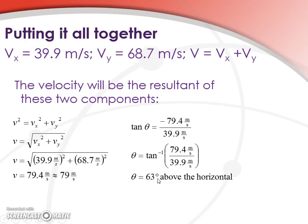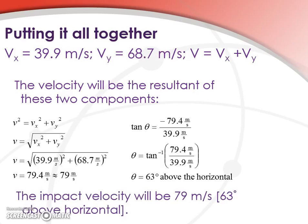And if we want to go back and look at our situation, these results are reasonable, right? Our velocity is lower because it's been moving upward and slowing down. And our angle is dropping as our y component is disappearing, but our x component is remaining constant. So these results do seem reasonable. And our impact velocity is 79 meters per second, 63 degrees above the horizontal.